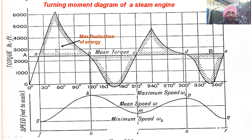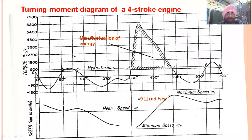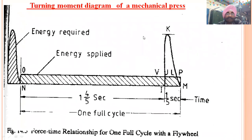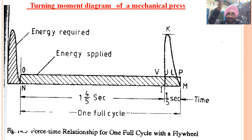In a four-stroke engine, the TMD has two negative loops and one positive loop, showing maximum fluctuation of energy. The shaded area represents excess energy which the flywheel stores. In the mechanical press example, the motor supplies constant energy, but when cutting a sheet there is a heavy load — the flywheel stores energy when there is no requirement and releases it during the cutting operation.